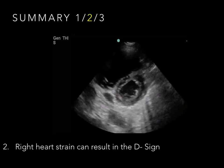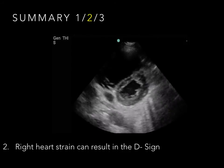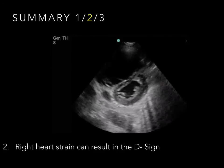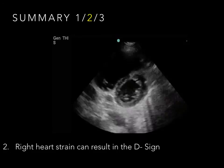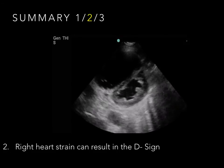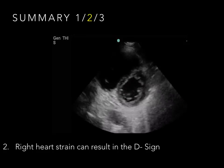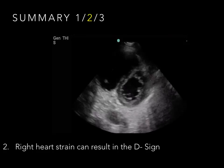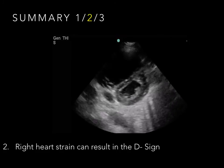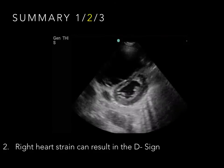Take-home point number two: the D sign with left ventricular bowing in the parasternal short axis view may be indicative of PE. Both right ventricular enlargement and the D sign may also be present in patients with chronic right ventricular strain, such as those with pulmonary hypertension, and may not be specific for pulmonary embolism.